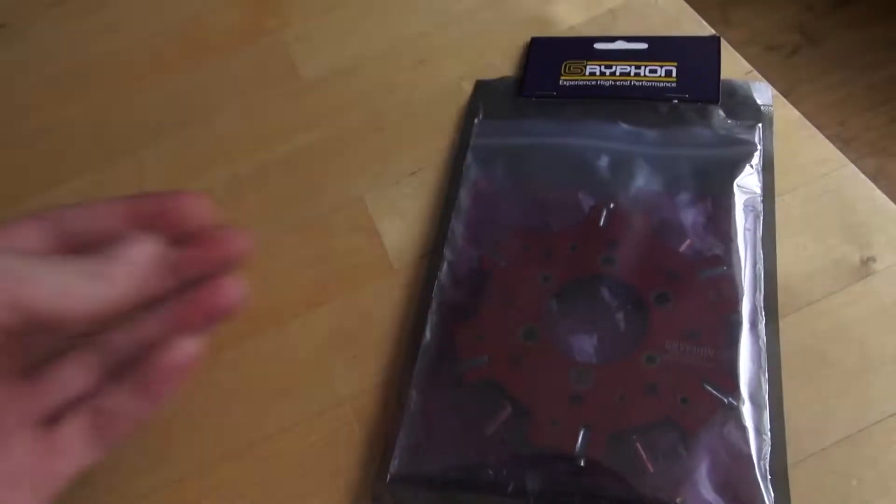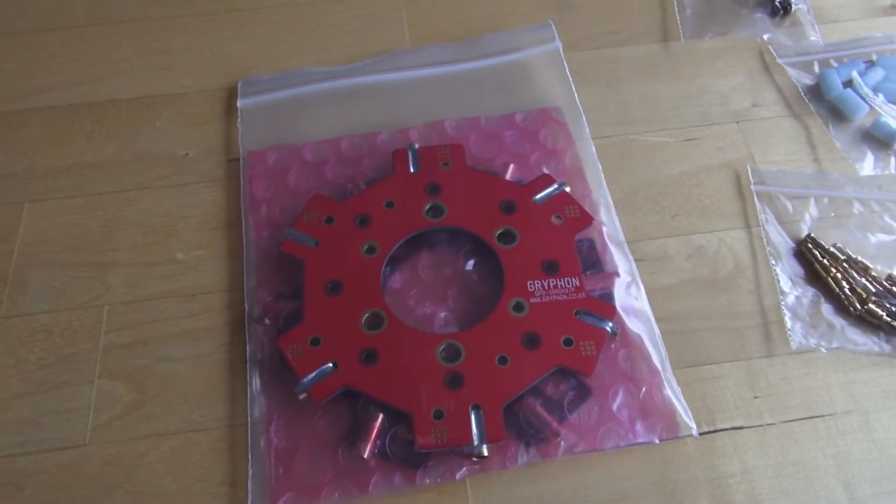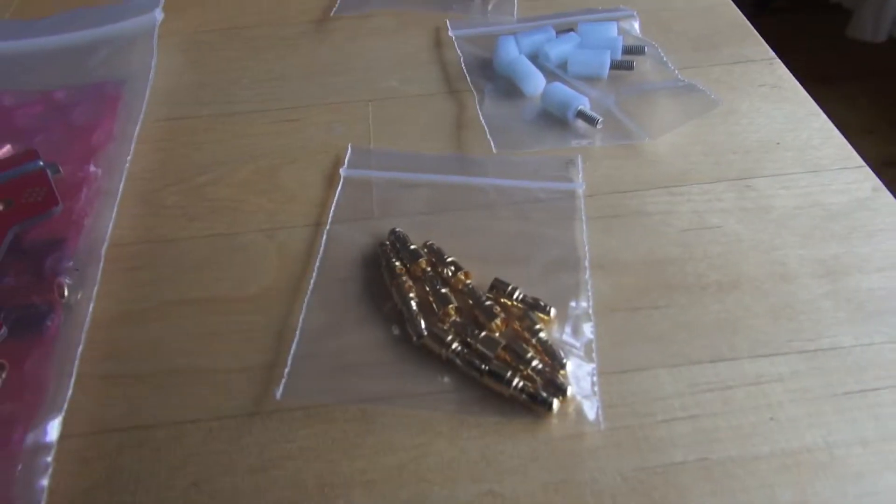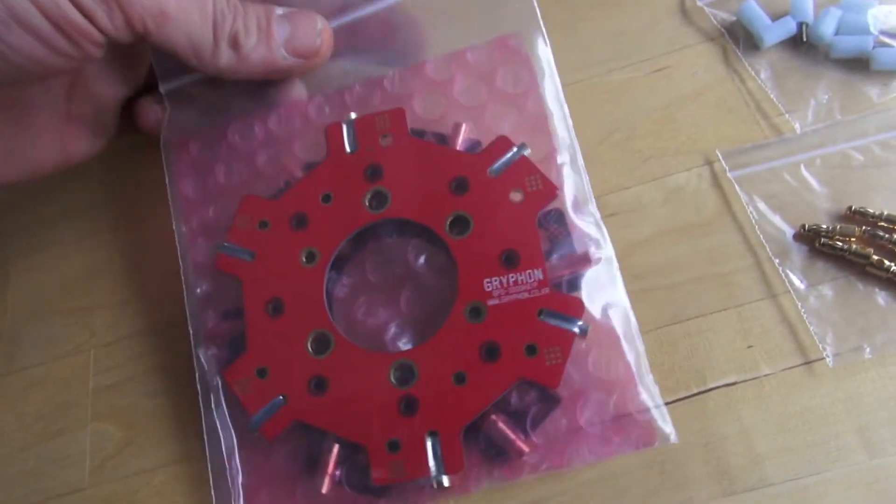Okay let me open it up. When we open it up, let me see what's in here. These bullet connectors, one of these spacers, some screws, and here we have the actual plates.